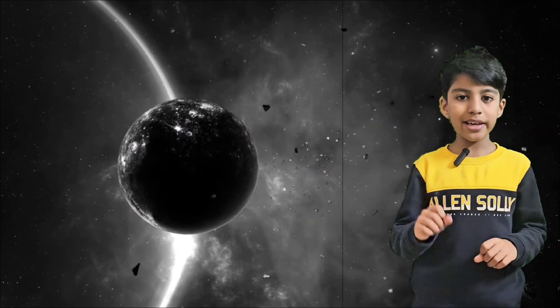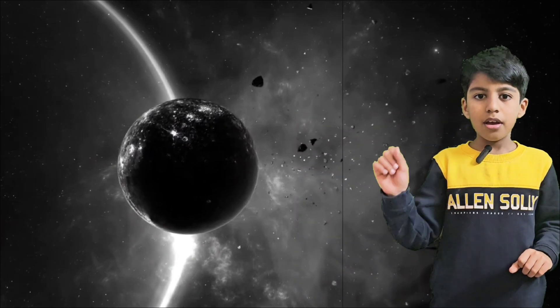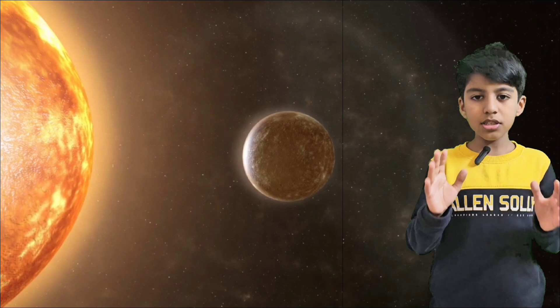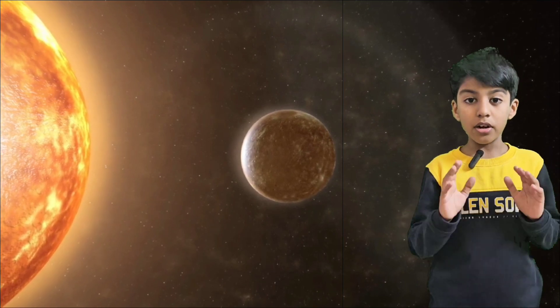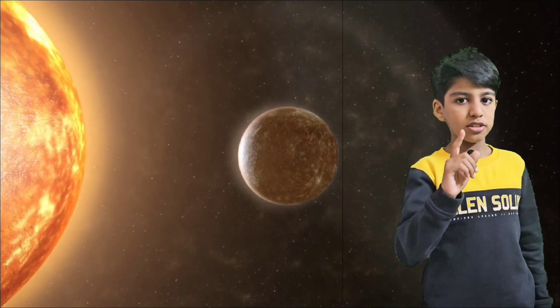Its year is 88 Earth days. Its distance from the Sun is 36 million miles, and it is the first planet in the solar system.